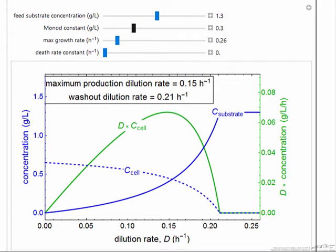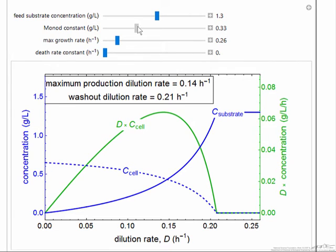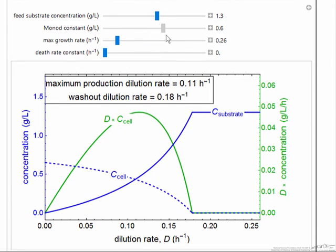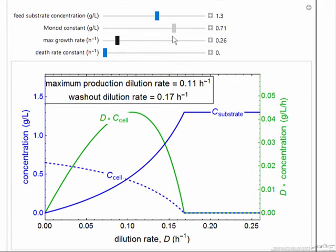If I increase the Monod constant, this is in the denominator, and now notice the scale on the right is decreasing.